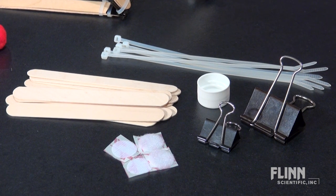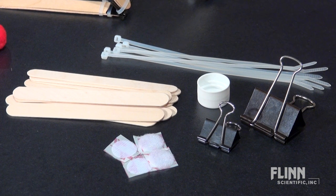To build a binder clip catapult, you will need some tongue depressors, binder clips, cable ties, a bottle cap, and velcro dot tape.